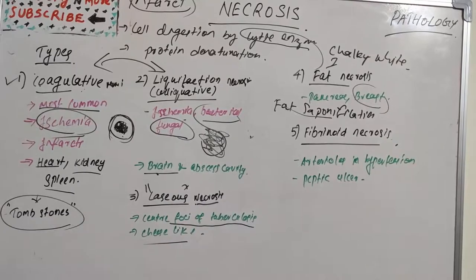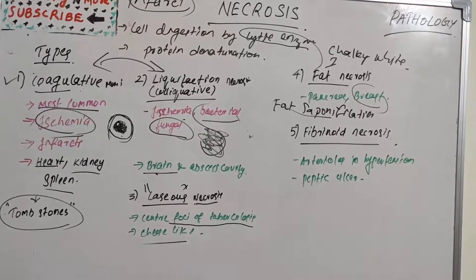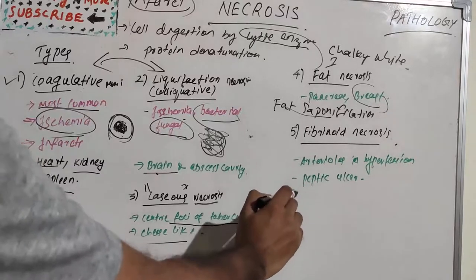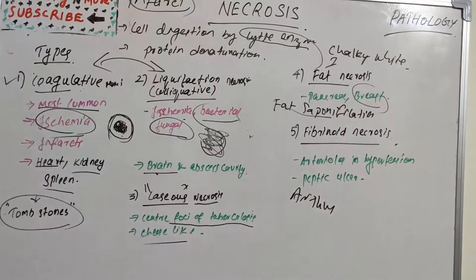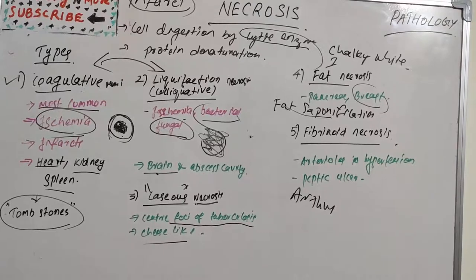The last type is fibrinoid necrosis, characterized by deposition of fibrin-like material which has the staining properties of fibrin. It is encountered in various examples of immunological tissue injury such as immune complex vasculitis, Arthus reaction, peptic ulcers, autoimmune diseases, and arterioles in hypertension. Microscopically, there is brightly eosinophilic hyaline-like deposition in the vessel wall, a necrotic focus surrounded by nuclear debris of neutrophils, and local hemorrhage.